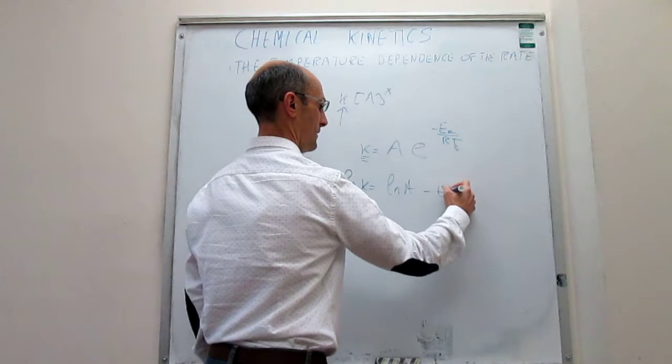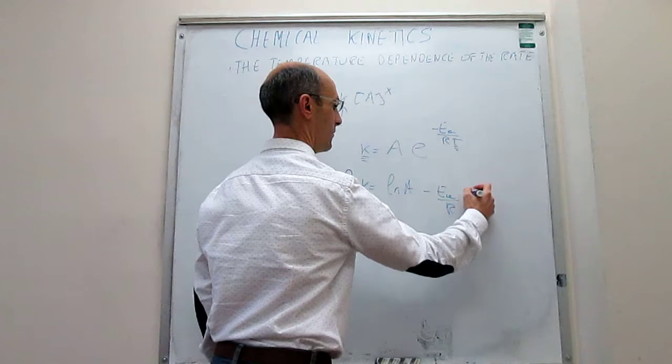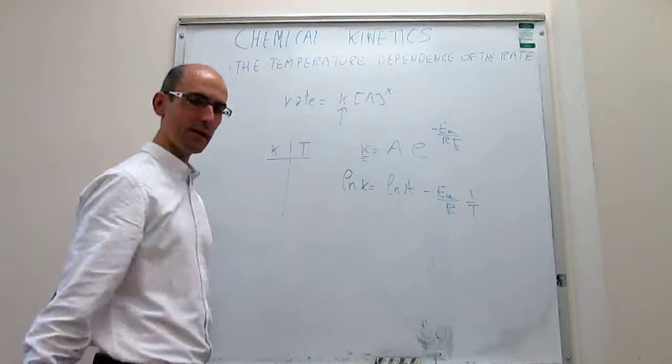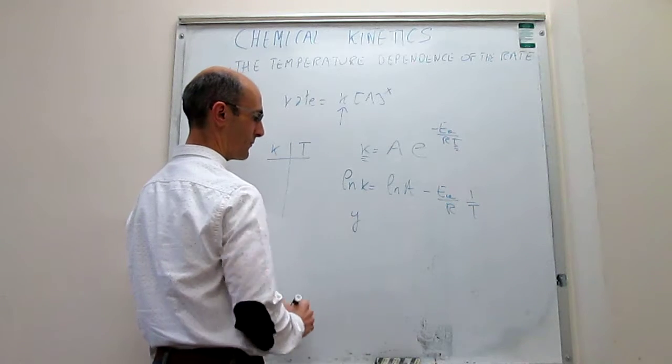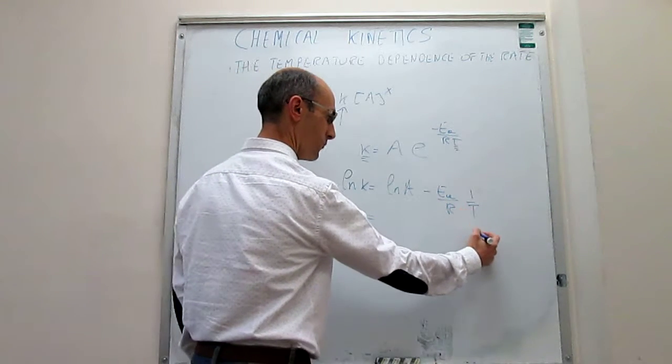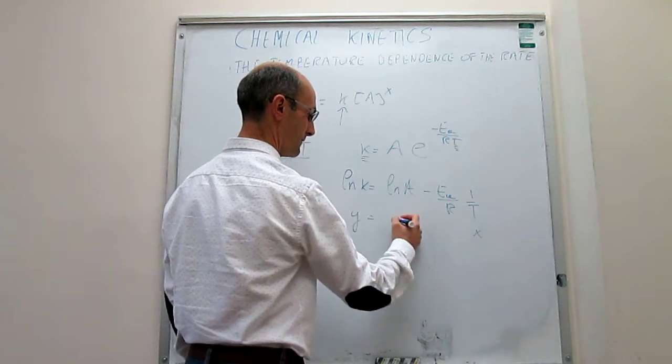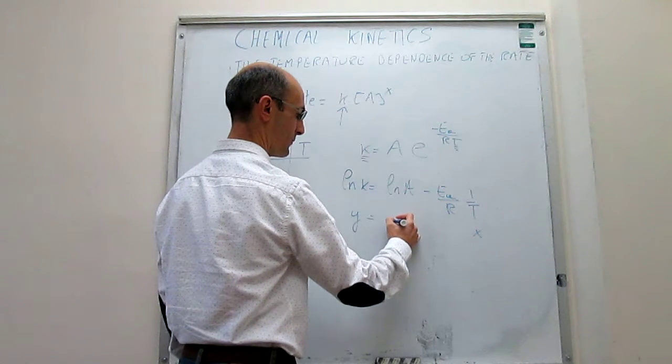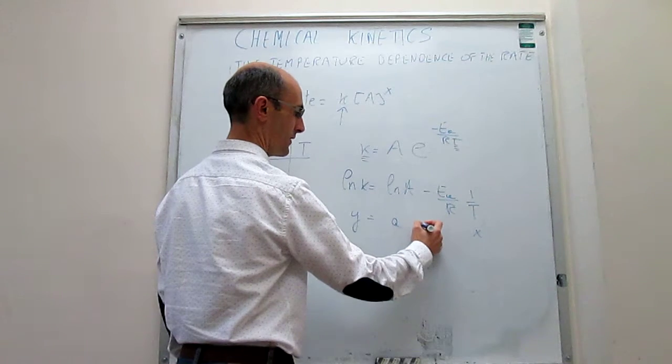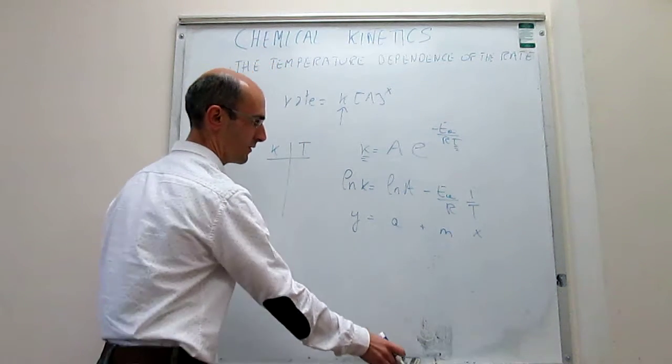ln(k) = ln(A) - Ea/R * (1/T). And this is a linear expression if you plot the natural log of the rate constant on the y-axis and one over T on the x-axis. If that's the case, then you can determine the pre-exponential factor from the intercept and the activation energy from the slope.